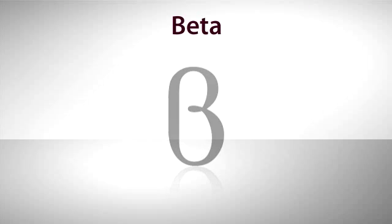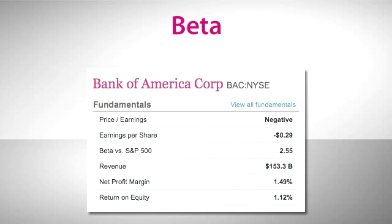What is beta? When you're researching a stock, you'll often see, along with some other fundamental information, a value for the beta of the stock. Here we see that Bank of America has a beta of 2.55. Well, what does that mean?